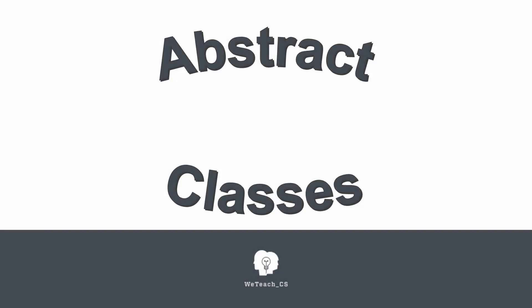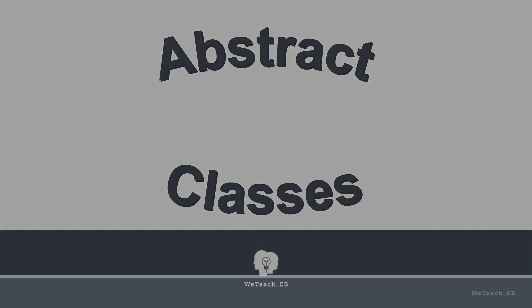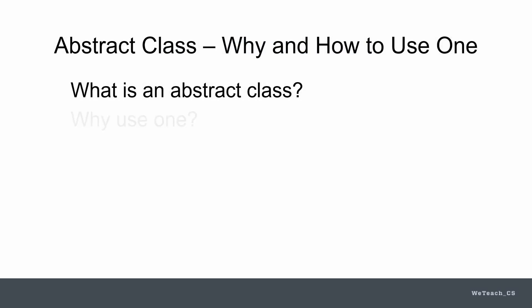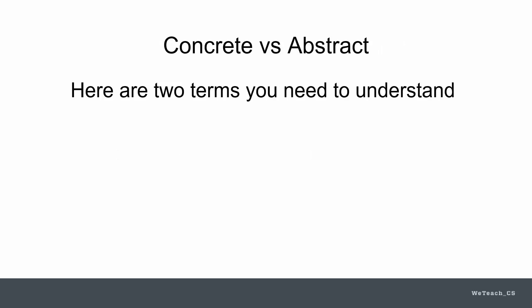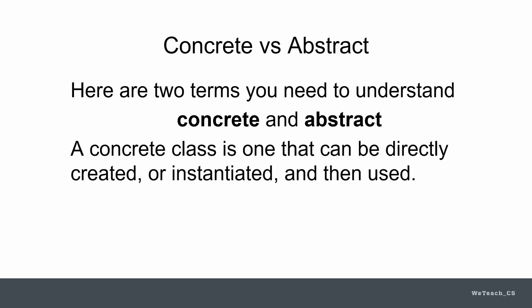Let's discuss abstract classes in object-oriented programming. We'll walk through the idea and technique of using an abstract class and talk about how to use one, as well as when and why it is advantageous to do so. To get the full feel of this process, we'll use an actual Java program example to help demonstrate this idea. What is an abstract class anyway? Why use one? When should you use one? To answer all of these questions, we need to review what classes are all about. Here are two terms you need to understand: concrete and abstract.